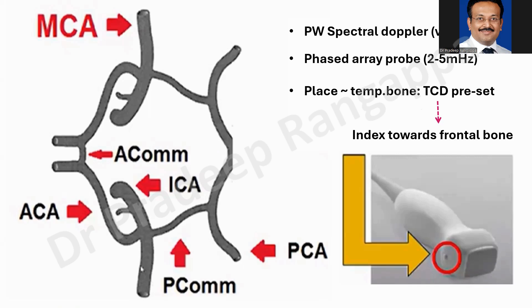The index or cursor of the probe should be facing towards the frontal bone — this is the orientation when doing TCD and it is important. For every vessel we are visualizing, we need to keep the depth at around 70 to 80 millimeters, or up to 8 to 10 centimeters. For each vessel there is a certain depth at which you would typically visualize it.